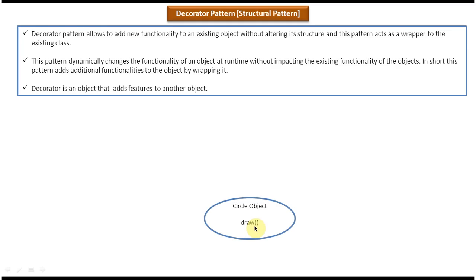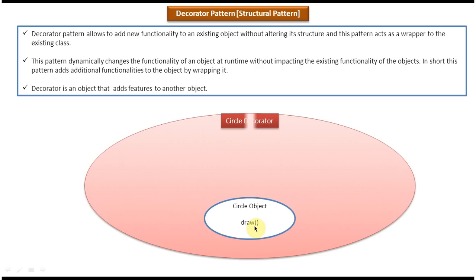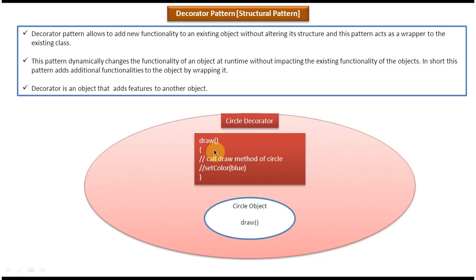What I can do is introduce a circle decorator object which will wrap the circle object. The circle decorator will also have a draw method. What this draw method of circle decorator will do is: first it will call the draw method of circle so that it will draw the circle, then it will call the set color method of circle decorator to set the color of the circle — in this case it is setting blue color to the circle.